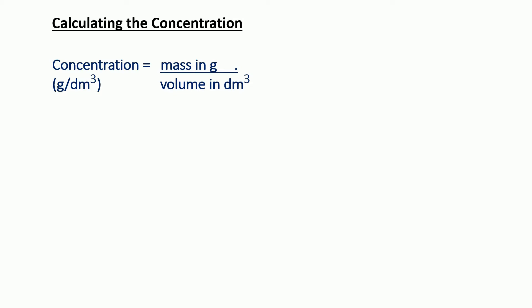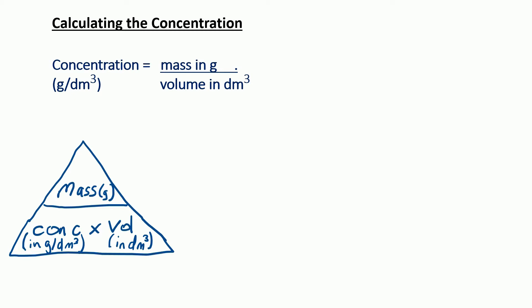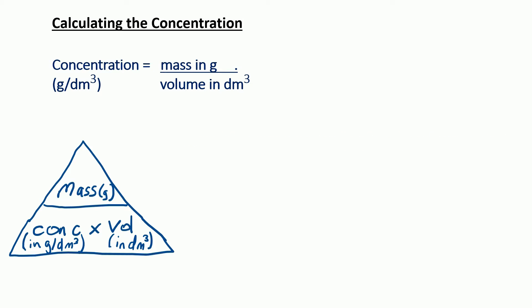If we put that into a triangle so we can work out different variations, mass is above volume in the equation, so mass goes at the top of the triangle, and then we've got concentration and volume underneath. So if we wanted to work out the mass, you cover up mass in the triangle and you're left with concentration times volume in dm cubed.